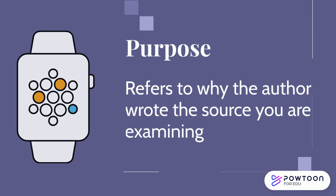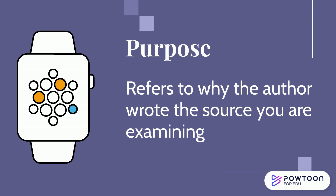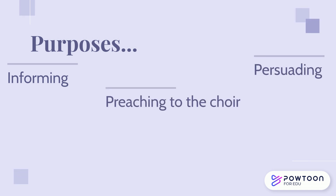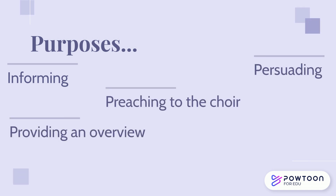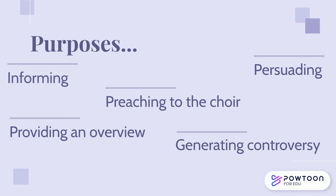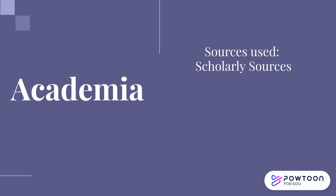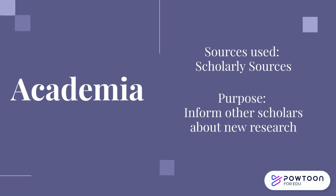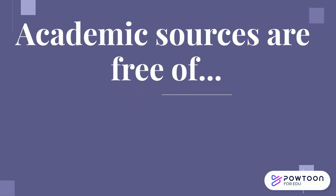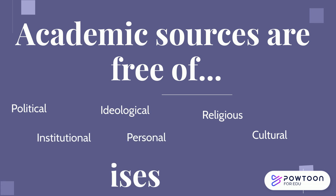The last element to consider when evaluating sources is purpose. This refers to why the author wrote the source you are examining. Some purposes include informing, persuading, preaching to the choir, providing an overview, or generating controversy. In academia, the sources used most are scholarly or peer-reviewed sources. The purpose of these sources is to inform the academic community about new research within specific disciplines. These sources are generally free of overt political, ideological, cultural, religious, institutional, or personal biases.